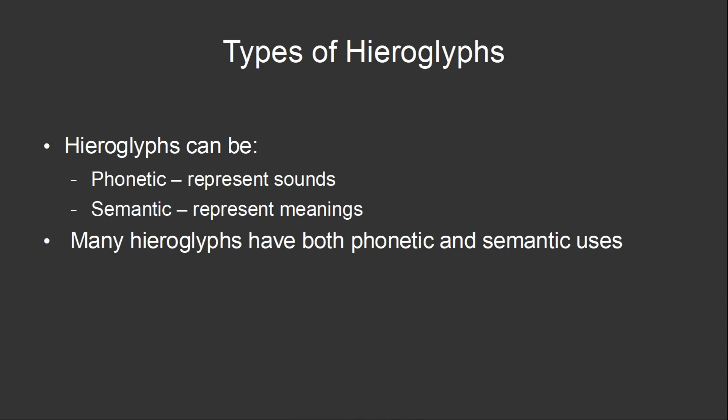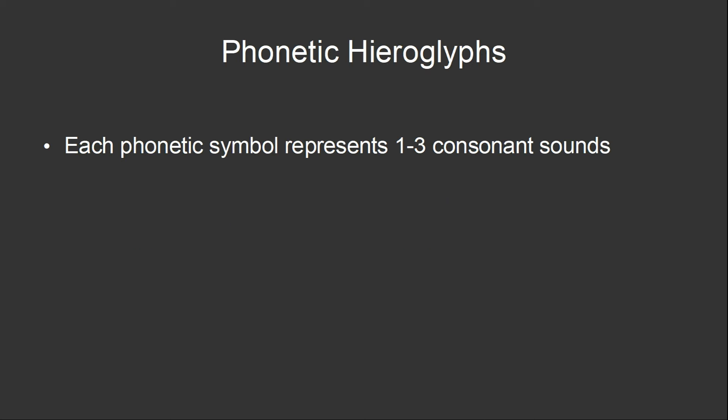There are two ways that hieroglyphs can be used. They can either be phonetic, representing sounds, or semantic, representing meaning. Most words are written with the combination of phonetic and semantic symbols. Phonetic symbols represent sounds, or more specifically consonants. They may be monoliteral, representing one sound, biliteral, representing two sounds, or triliteral, representing three sounds.